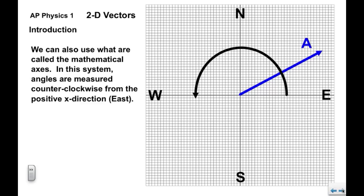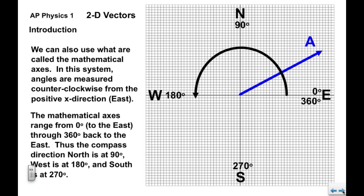We can also use what are called the mathematical axes. In the mathematical axes system, angles are measured counterclockwise, this way, from the positive x direction to the east. So our angles are measured this way. You can see that the mathematical axes range from zero degrees, which is to the east, all the way around back to 360 degrees, which is also to the east.